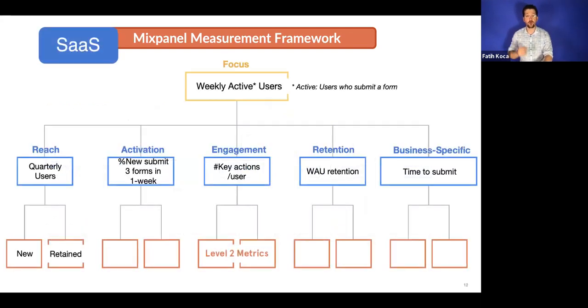Let's see an example for a SaaS business, which is a simple SaaS business. Its only action or only key action is enabling the users to submit a form. So we want all the users to submit a form every day. So a good focus metric for this business could be weekly active users, and active here is users who submit a form, not just users who come to the product and do nothing or do things that we don't necessarily want them as a key action.